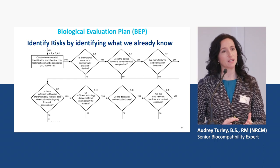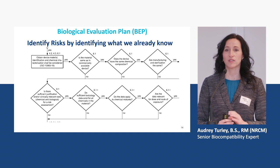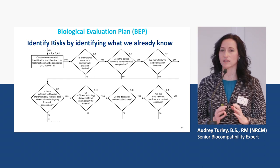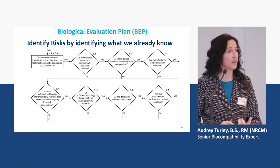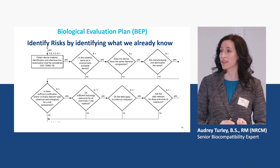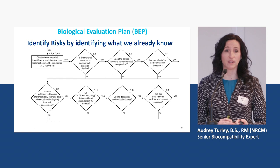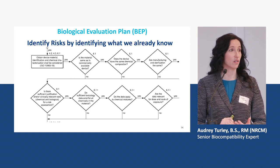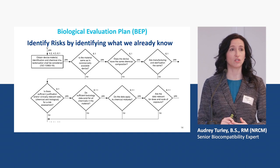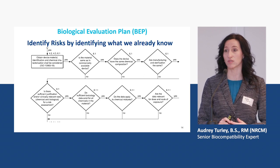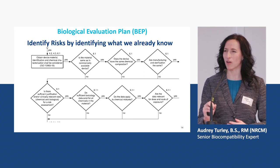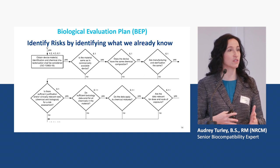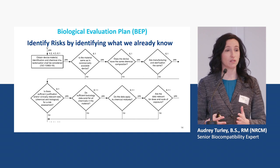This flowchart in 10993 Part 1 is the guiding question flow for how we mitigate risk. We look at our materials and ask: do we already use this material in another device? Is it sterilized and manufactured the same way? Does it touch the patient in the same way? Will that biocompatibility testing support the use of this material? Do we need chemical characterization testing? It guides you through questions so you can identify what material information you already have at your facility and how to better organize your documentation.